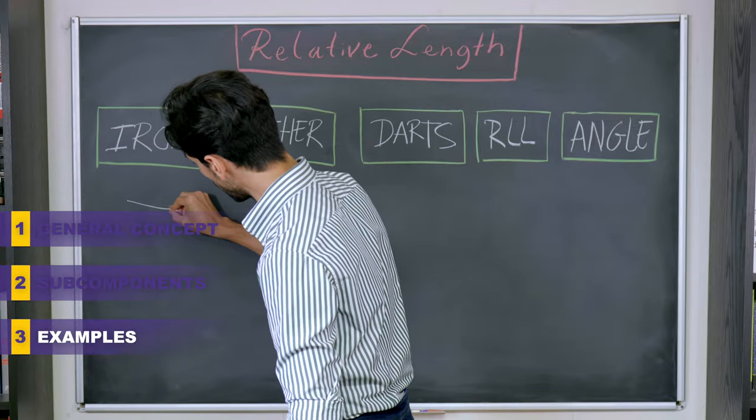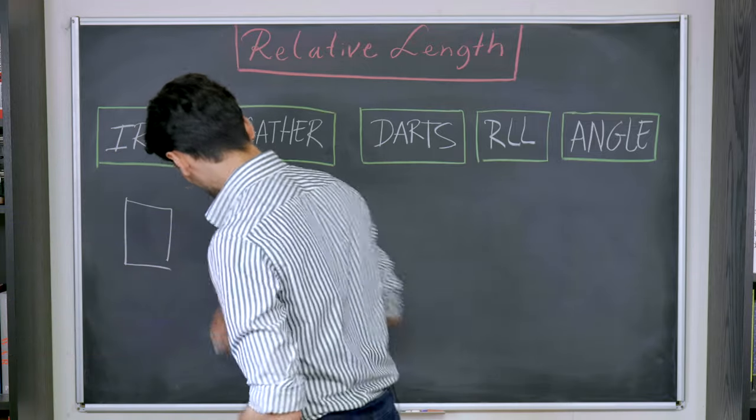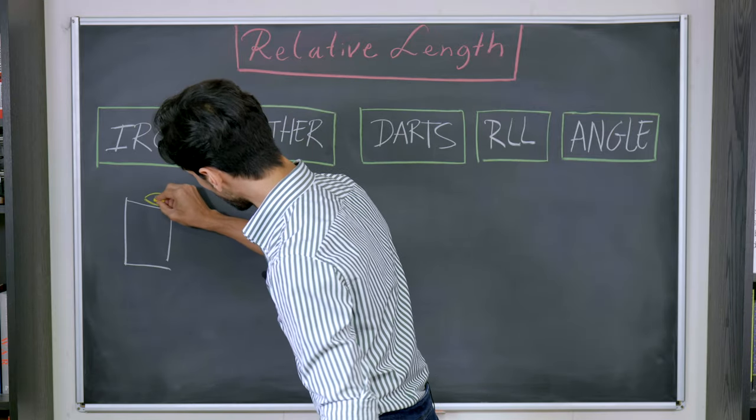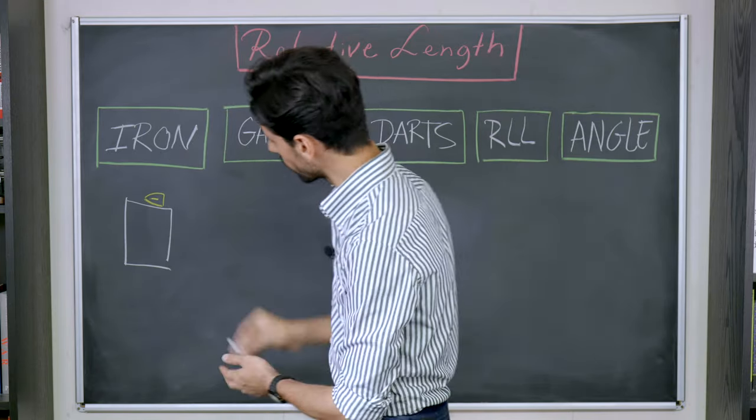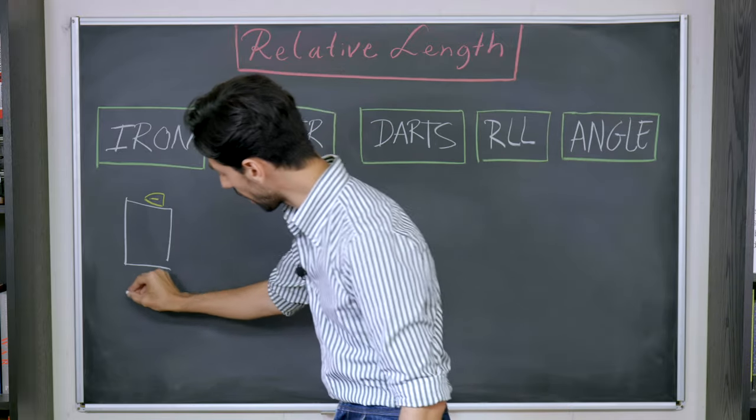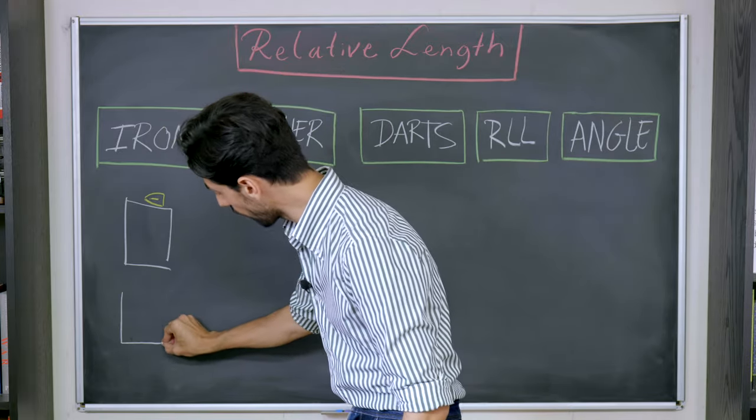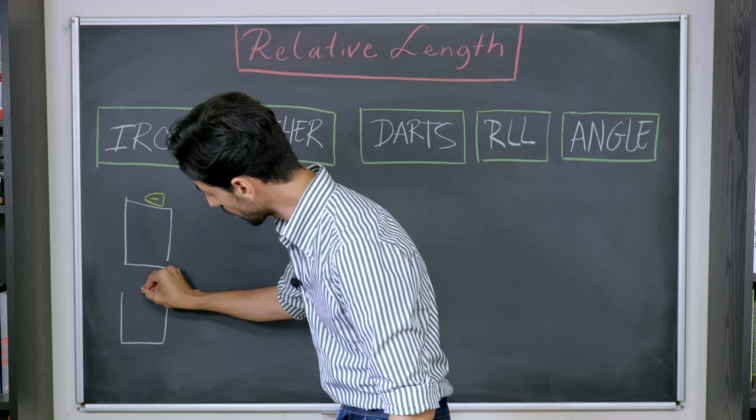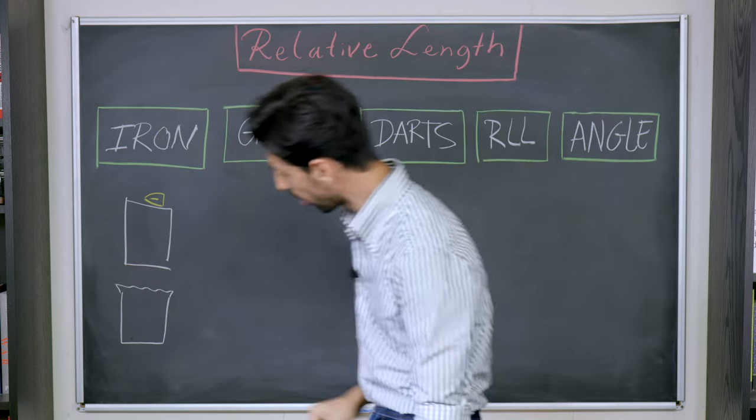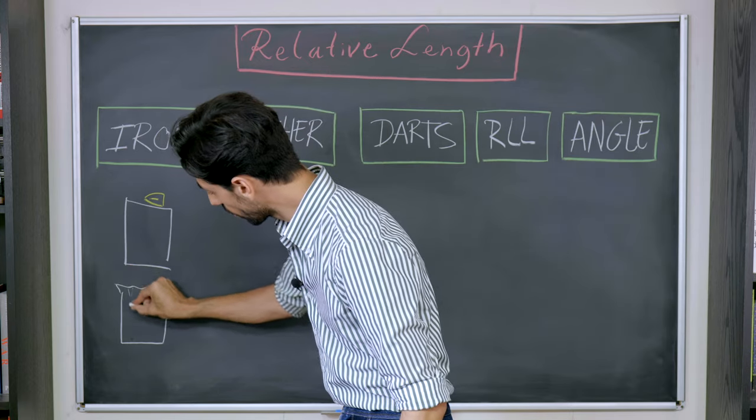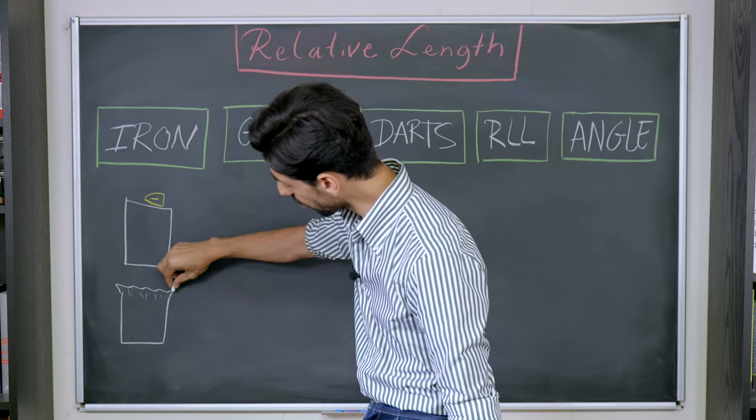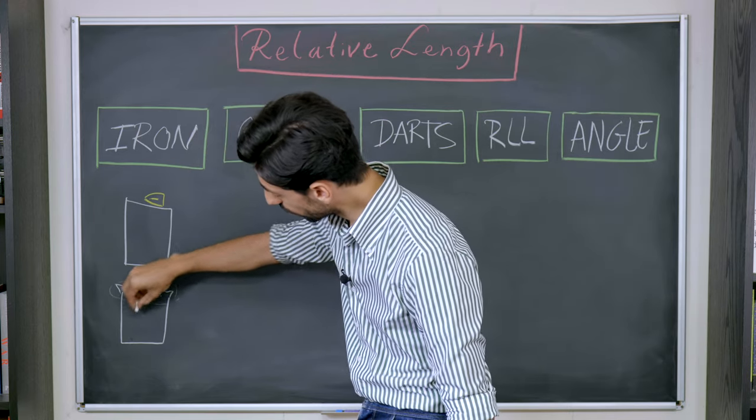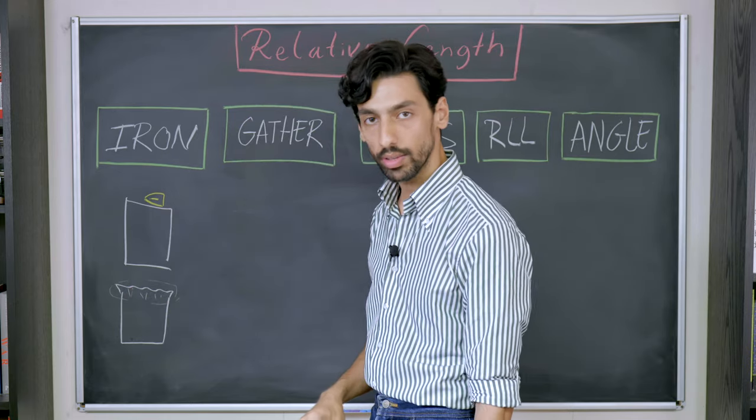So for example, if we have a square here and we take our iron, let's say this is our iron, and we stretch out the top edge of this square, what's going to happen is we're going to end up with a square that has a ripply edge because that edge has become longer, like so. We have changed the surface of this upper edge relative to the surface underneath it.